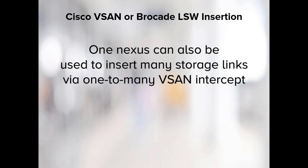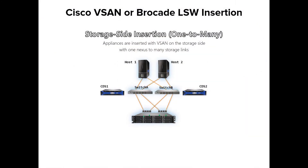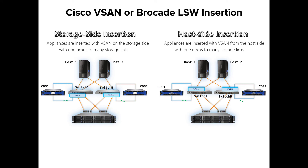One nexus can also be used to insert many storage links via one-to-many vSAN intercept. In this one-to-many vSAN insertion scenario, appliances are inserted with the vSAN on the storage side with one nexus-to-many storage links. A nexus of the first CDS appliance is connected to the switch, and the vSAN is configured on the switch for the downstream nexus port and multiple storage target ports. Client server data IO traffic of multiple links resumes through the CDS appliance nexus via the vSAN. A second CDS appliance is inserted in the same manner. For host side insertion, appliances will be inserted with the vSAN from the host side with one nexus-to-many storage links.